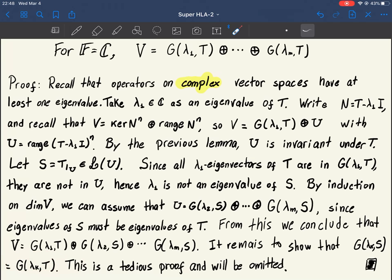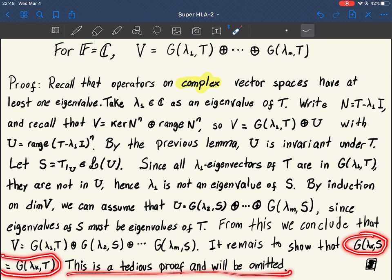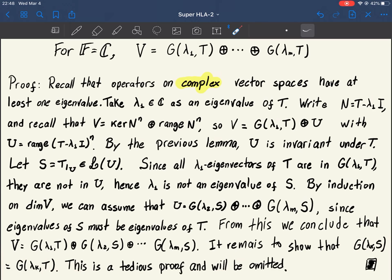We just omit the proof of this fact. It's very tedious and otherwise uninteresting proof. We will not show it. We omit it, and if you want the details, you can see the proof. It's just like this on the textbook.